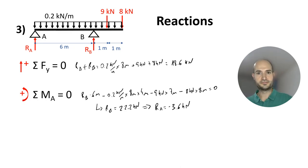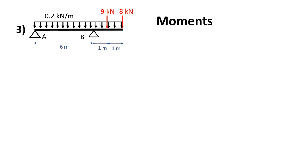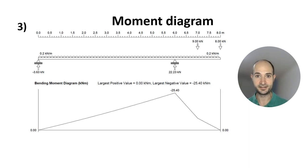Why is it negative? Well, it means that the arrow I am showing for RA, that red arrow, is on the wrong direction. So there is uplift on support A. Now let's calculate the moment diagram. This is the moment diagram. As you see, because we only have point loads on the cantilever span, all the moment is negative.